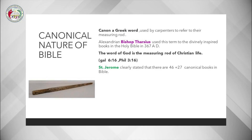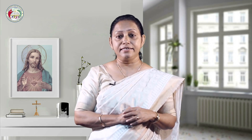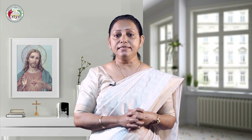Let's learn about the canonical nature of the Bible. Canon is a Greek word used by carpenters to refer to their measuring rod. Alexandrian Bishop Tharsus used this term for the divinely inspired books in the Holy Bible in 367 AD. The word of God is the measuring rod of Christian life, which is explained in Galatians as well as in Philippians 3:16. St. Jerome clearly stated that there are 46 plus 27, making 73 canonical books in the Bible.